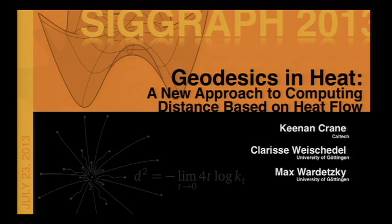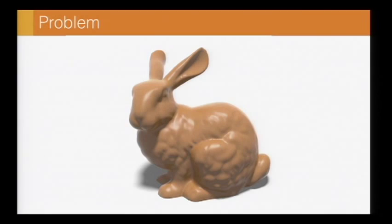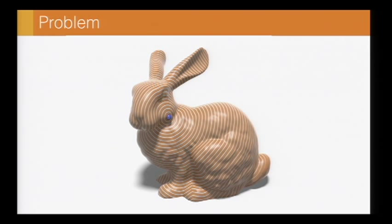Now I'm going to look at a completely different problem, which is how do we compute distance in a fairly general setting. The problem here is I have a domain like this bunny, and I have maybe a distinguished point like this blue dot on his cheek. And what I want is to find the shortest distance to every other point.